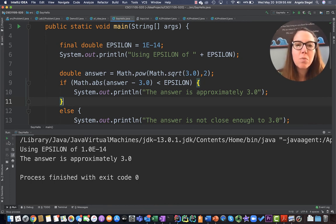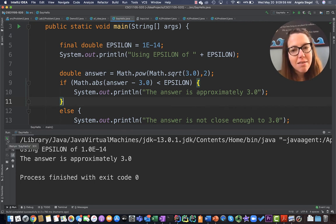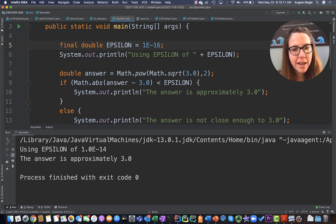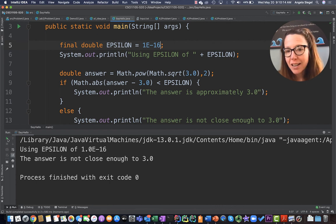If I run this program with epsilon set to 10 to the minus 14th, then the answer is approximately 3.0. It's less than epsilon away. However, if I change my epsilon to 10 to the minus 16th and I run it again, what I find is now I'm not close enough. And so if I decided that I needed that greater precision, then this is not close enough.